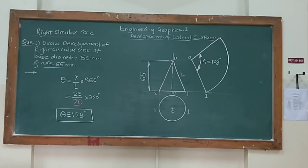This is generator length. So just put this value 70 in the formula R by L into 360. You will get the answer theta. It is coming out to be 128 point something. So round up to 128.